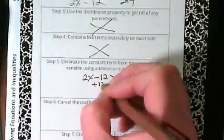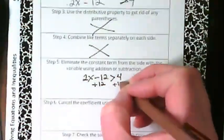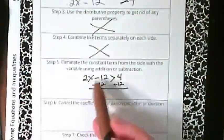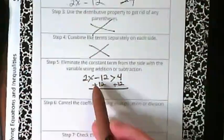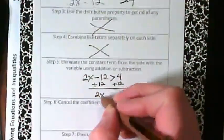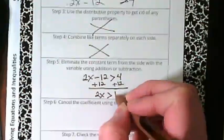It's the 12. Why the 12 and not the 4? Because it's on the side with the x and we're trying to get that x by itself. So we end up with 2x is greater than 16.